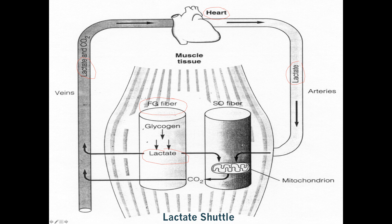Lactate can continue in the arterial circulation and go to a separate, more oxidative slow-twitch muscle cell, which takes up lactate, converts it back to pyruvate, and sends it into the mitochondria as a fuel source. Lactate can also be transported directly to a neighboring muscle cell — it doesn't necessarily need to enter the circulation. If a neighboring cell is a slow-twitch fiber with lots of mitochondria, lactate is transported there, converted to pyruvate, and used as fuel.